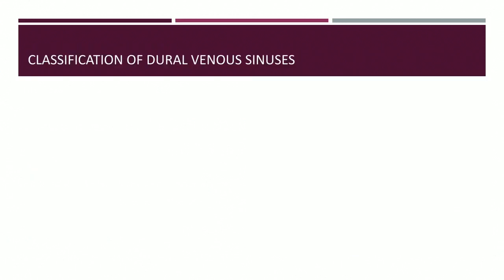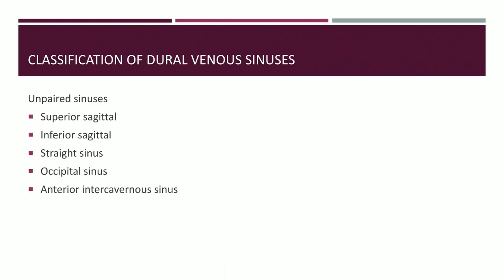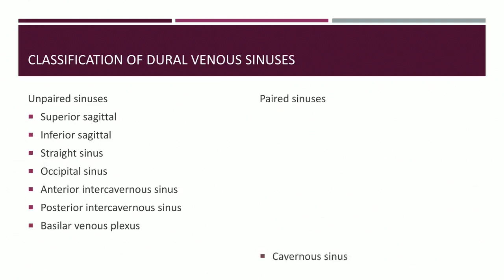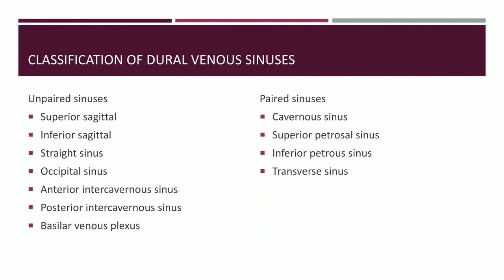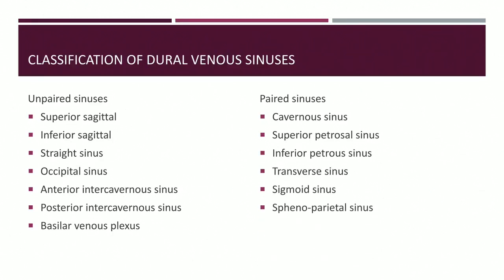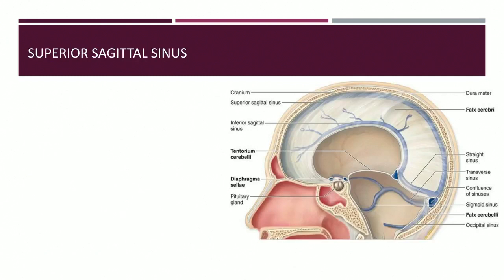There are two types of dural venous sinuses: unpaired and paired. The unpaired sinuses include the superior sagittal, inferior sagittal, straight, occipital, anterior and posterior intercavernous sinuses, and the basilar plexus. Paired sinuses include the transverse, sigmoid, superior petrosal, inferior petrosal, sphenoparietal, and petrosquamous sinuses — totaling approximately 23 sinuses overall.